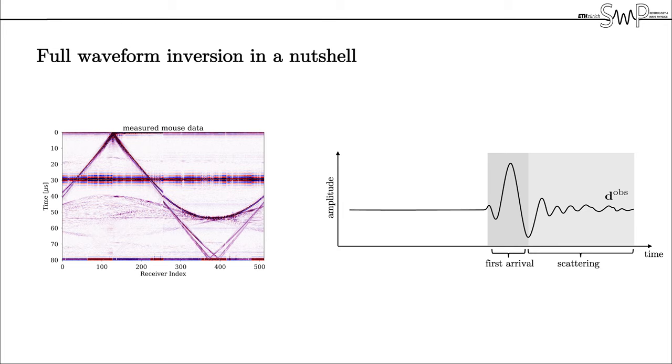To obtain a model of the tissue structure we first generate a so-called set of synthetic data from an initial speed of sound model by performing a time domain wave field simulation. The goal is then to minimize the discrepancy between the observed and the synthetic data by iteratively updating the initial model with new information until convergence is reached.